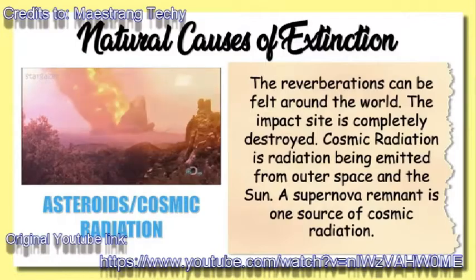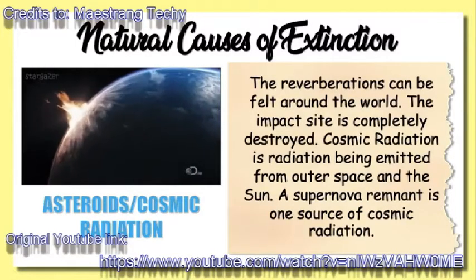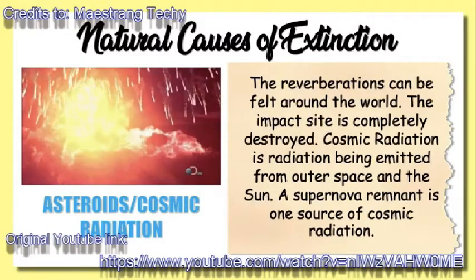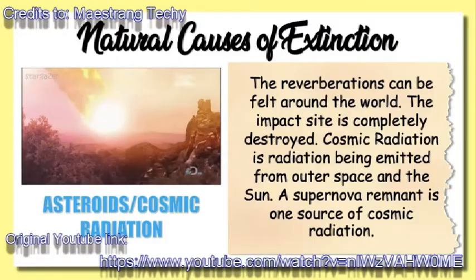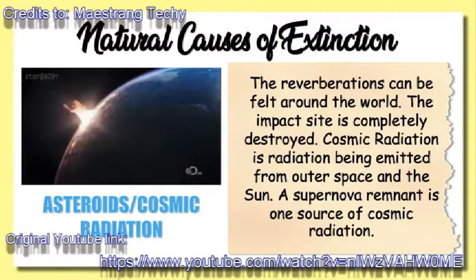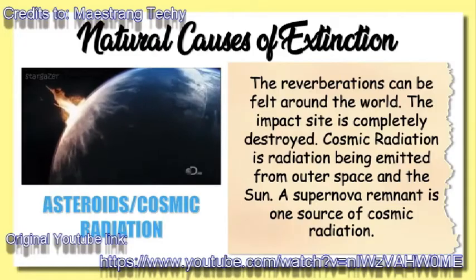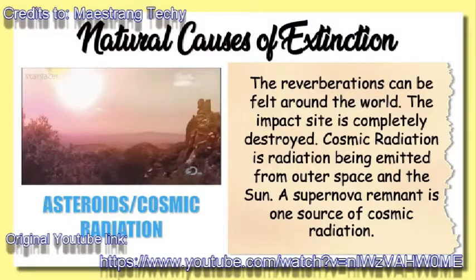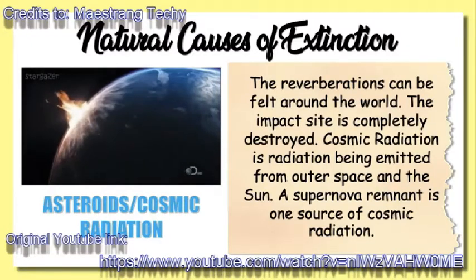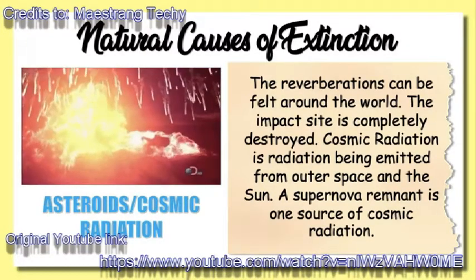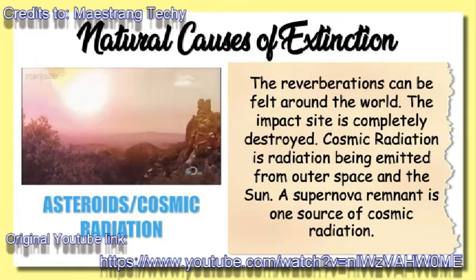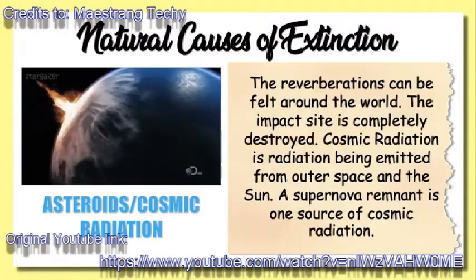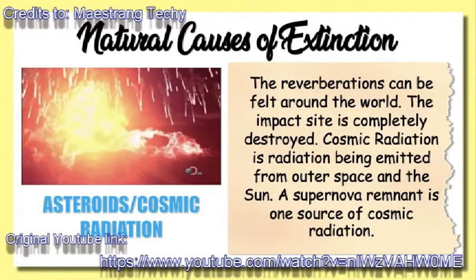Next, asteroids and cosmic radiation. Asteroids hit the Earth with extreme force. The reverberations can be felt around the world, and the impact site is completely destroyed. Cosmic radiation is radiation being emitted from outer space and the sun. It is hypothesized that being exposed to too much cosmic radiation can mutate genes, which can potentially weaken a species' gene pool in the future. Since the radiation comes from space and the sun, it is extremely difficult to avoid. A supernova remnant is one source of cosmic radiation.